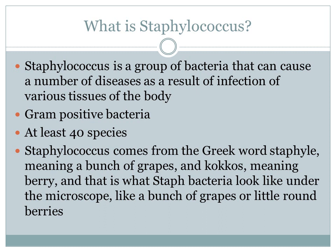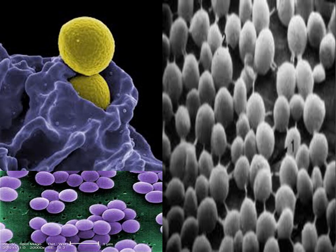Under a microscope, Staphylococcus looks just like a bunch of grapes or little round berries. This is an example of Staphylococcus under a high-resolution electron microscope.